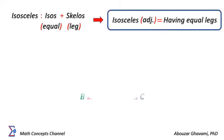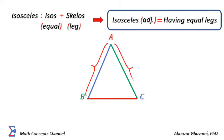An isosceles triangle is a triangle with at least two equal sides.